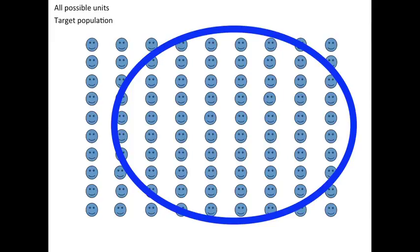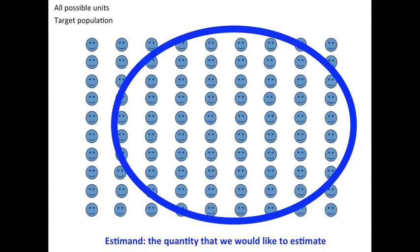In the election example, the target population is not just all people, but all people in Massachusetts who are going to vote in the next election. The estimand, again, is the quantity that we would like to estimate. So it's something that we could calculate if we actually had information on every unit in the target population. Again, if we actually had all the information in the target population, we wouldn't have to estimate anything. We wouldn't need to do any sort of statistical test. We could just calculate the average of all their heights, the rate of their votes for the Republican, et cetera. That's the estimand, and that's a term that we'll return to throughout this course.